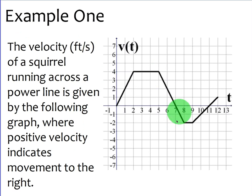Then its velocity is negative, which means it starts to back up. And at eight seconds, its velocity is negative two feet per second. So it's going two feet per second backwards. And then at 11 seconds, it's zero again.